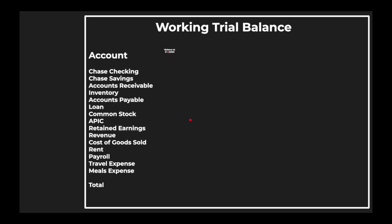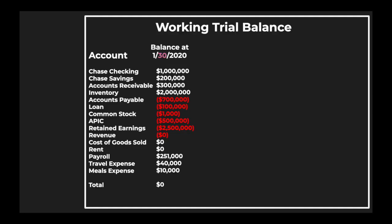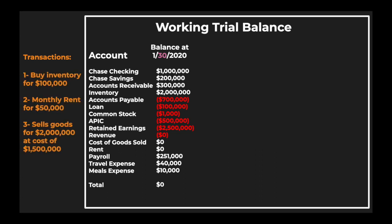Let's work through the same example looking at January 2020. We're looking at January 30th — one day before month-end — and we want to close the books. We have a few transactions to get in: we're buying inventory for $100,000, we've received an invoice for monthly rent for $50,000, and we've sold goods for $2 million at a cost of $1.5 million.